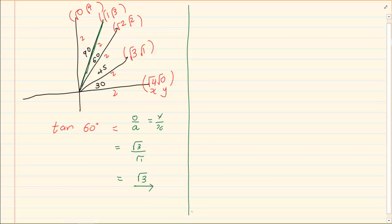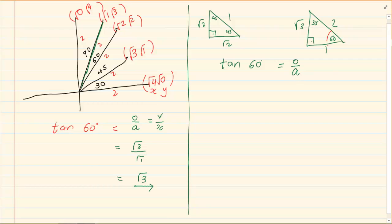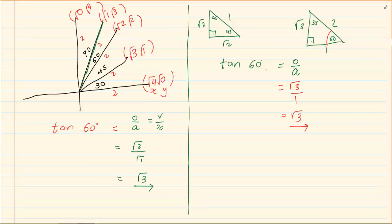The other way of doing special angles is by using two 90-degree triangles, which you also have to memorise. For example, tan 60 degrees is O over A: looking at the 60-degree angle, O is root 3 and A is 1, giving root 3. If you simply press tan 60 on your calculator it gives root 3 immediately. However, in exams — especially university entrance — you may not use a calculator for special angles, so it is advisable to learn one of these two methods.